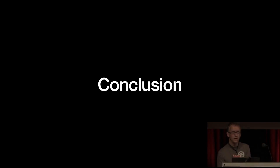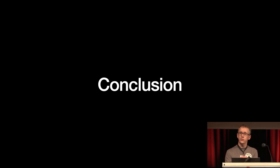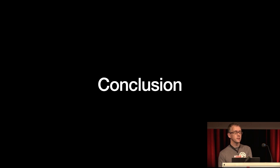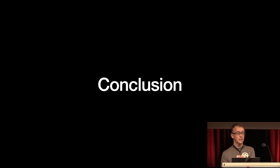To summarise, I've talked about three kinds of parallel execution when compiling Rust code: we already have inter-process parallel execution via Cargo; we already have intra-process parallel execution in the back end; and we're working on parallel execution in the front end. We hope the first version of this will ship in nightly in the next month. Thank you.